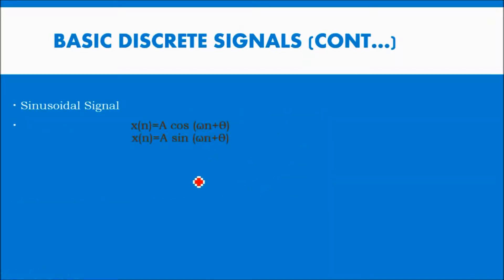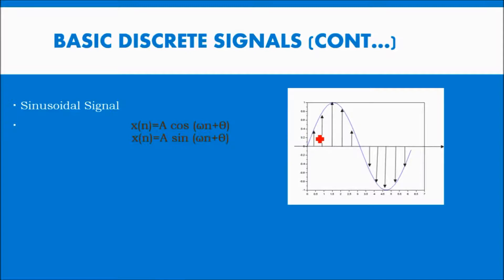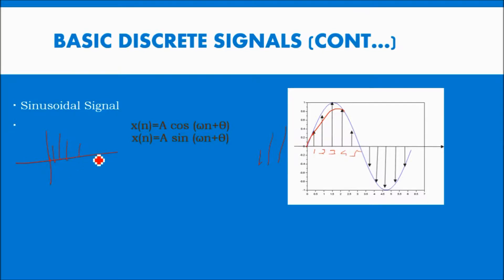The last basic signal is sinusoidal. The value is A cos(ωn + θ) for cosine and A sin(ωn + θ) for sine. This is the sine wave, but it is a discrete sine wave, with values at discrete points 1, 2, 3, 4, 5, 6 and so on. It could be cosine or sine. Those are the basic signals we have in DSP.